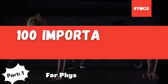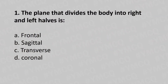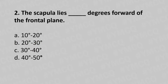Hello, welcome to today's topic: Biomechanics MCQ for physiotherapists, part one. First question: the plane that divides the body into right and left half is — option A: frontal, option B: sagittal, option C: transverse, option D: coronal. The answer is option B: sagittal.